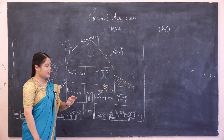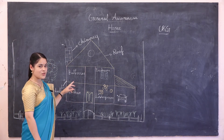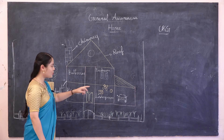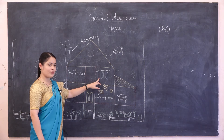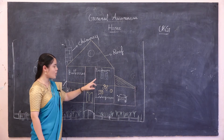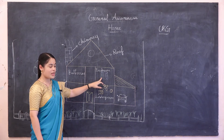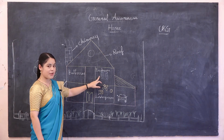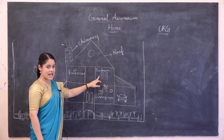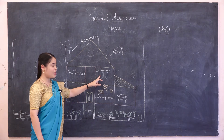Do you see any other things in this house? Yes, very good. Window. This house has one window. Window is made up of glass or wood.